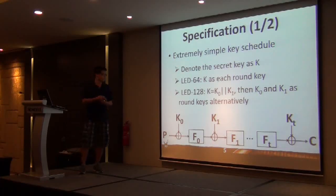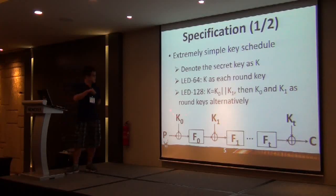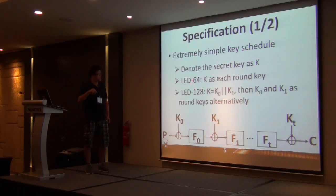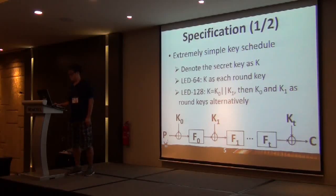I'll show the specification. This is what LED looks like. The plaintext will XOR the subkey and go to a public permutation, then XOR the next subkey, go to the next step function, and iterate until the end to produce the ciphertext. The key schedule function is extremely simple. In the 64-bit version, the master key K is used as a round key in each round. For 128-bit, K is split in half to K0 and K1, and they use K0 and K1 alternately.